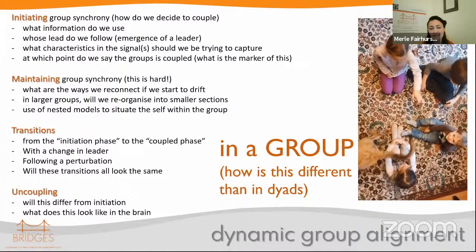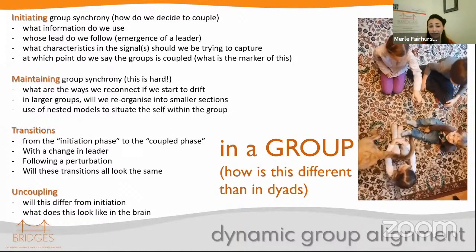Then, how do we maintain group synchrony? This is super hard, as you saw with my kids — they have distractions, they have different expertise, they're trying to harmonize. I've got questions which try to focus on what to quantify when thinking about maintaining group synchrony. And then there are these important transitions — from the initiation phase to a coupled phase, transitions when you change leader, or decide to harmonize.